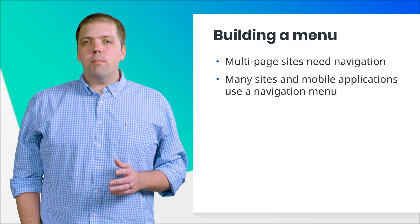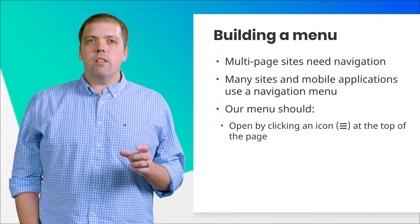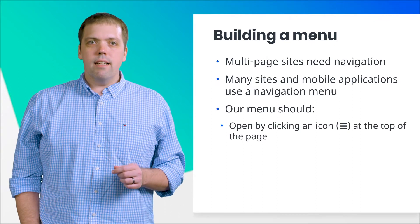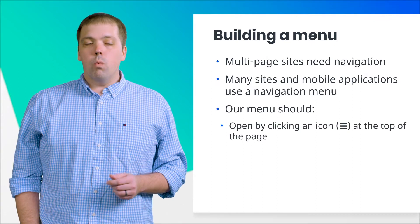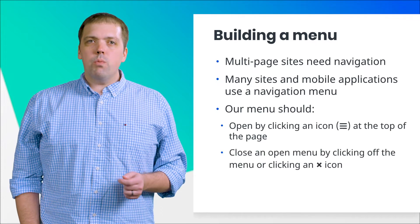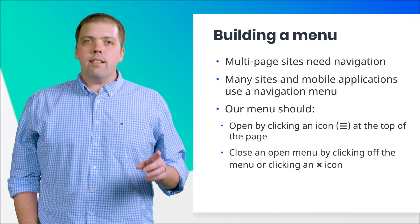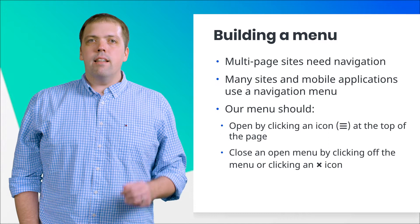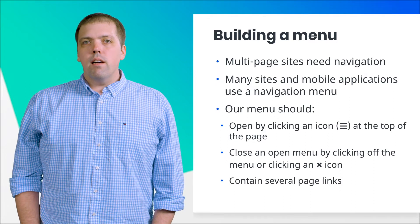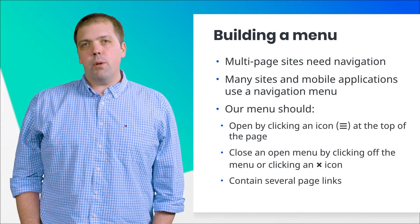Our product manager has said that our menu should open when the user clicks on a horizontal bars icon at the top of the page. Once open, the menu should close when the user either clicks off of the menu or clicks on an X icon in the menu's top right corner. And of course, our menu should also contain links to other pages.